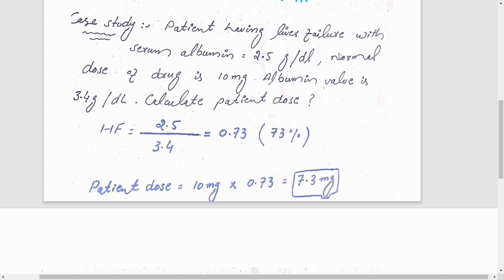Now we have a case history: patient having liver failure with serum albumin concentration which is equal to 2.5 grams per deciliter. We have a drug and the normal dose of the drug is 10 milligrams, while we have the albumin normal value is 3.4 grams per deciliter. Now we will adjust the dose.